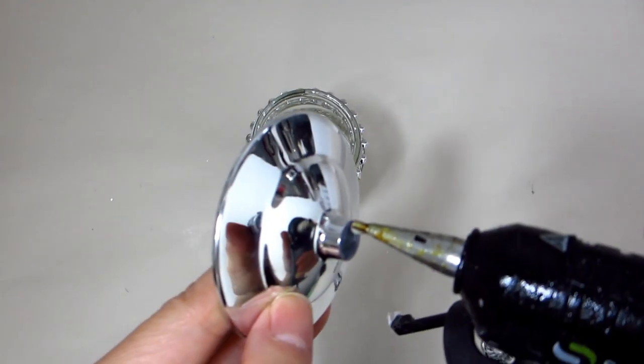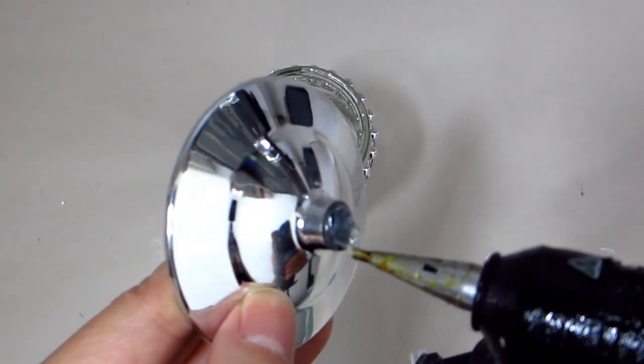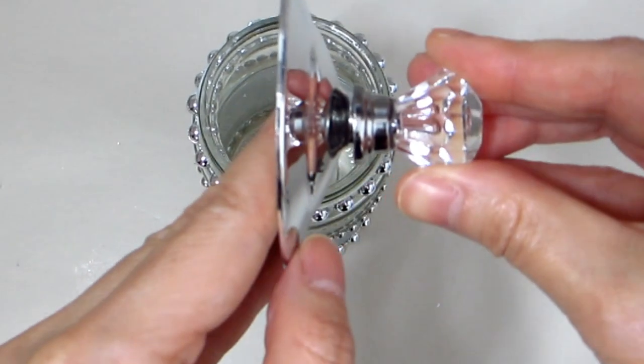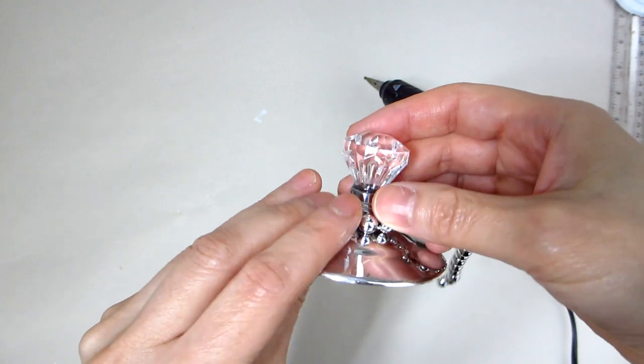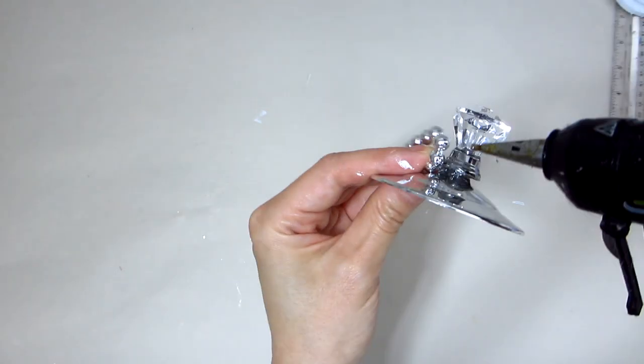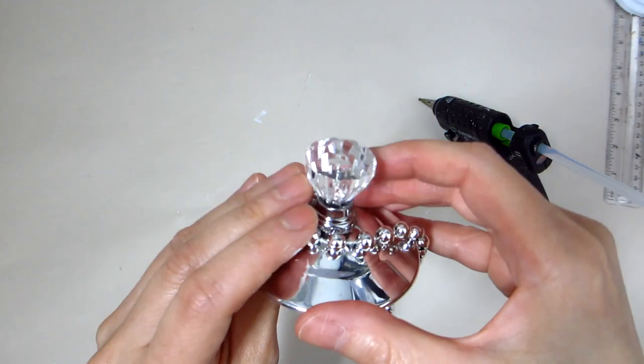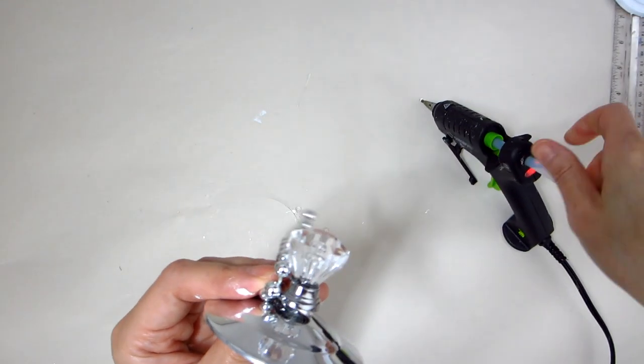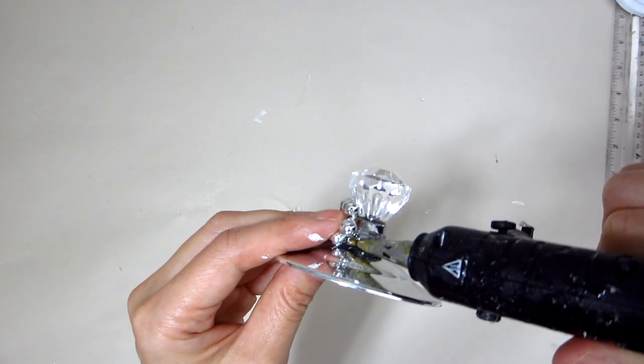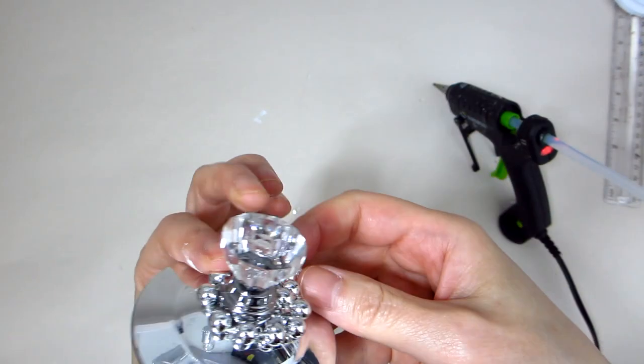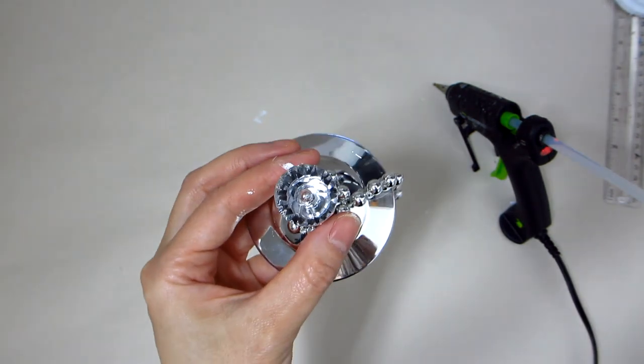For this second jar we will not be using the lid that came with the jar but rather we will be making one on our own using the stem of one of the plastic champagne glasses from the Dollar Tree. This one has a chrome like finish and is the perfect size to cover the opening of the jar. Here I have chosen to sit a crystal doorknob to the top and just like the other lid we made for our first apothecary jar we will apply a small string of silver beaded necklace all around the knob.